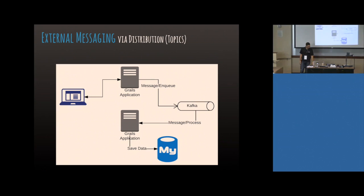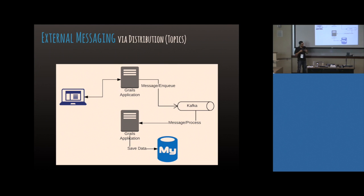This is an overly simplified version of distributed topics. Your Grails application will enqueue something remotely — into Kafka or Rabbit or something else. The beauty about distributed systems is that this doesn't have to be a Grails application — it's just some system. Another system can listen for that event on that topic, react to something that happened, and do some work.